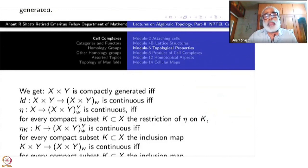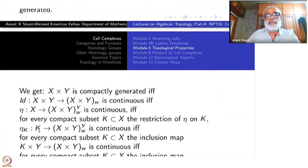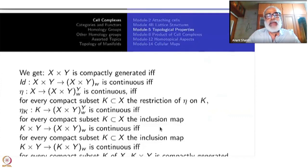By the definition of compactly generated topology, Eta being continuous is the same as saying: for every compact subset K of X, the restriction Eta_K from K to (X cross Y)_W is continuous. Going back by exponential correspondence, this is if and only if K cross Y to (X cross Y)_W is continuous for every compact K.